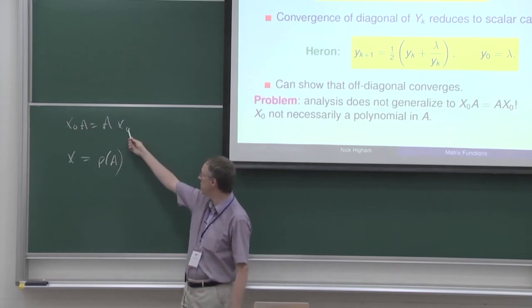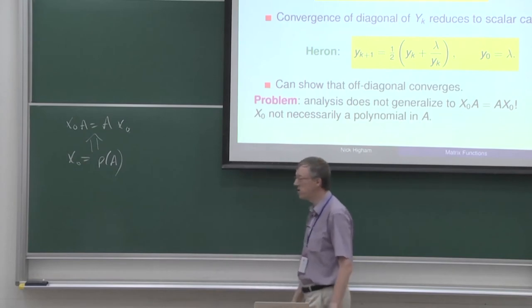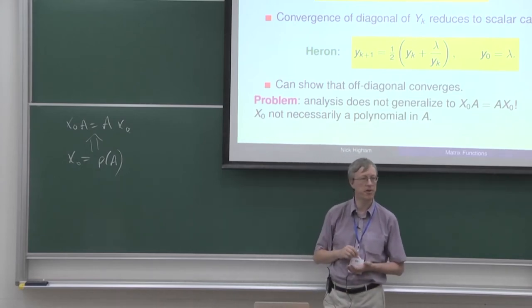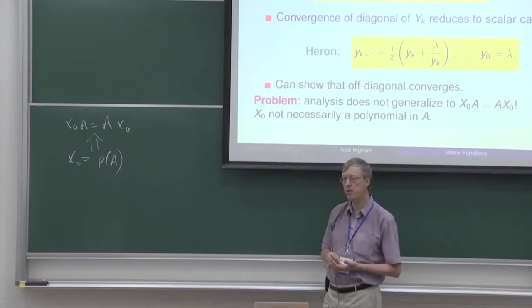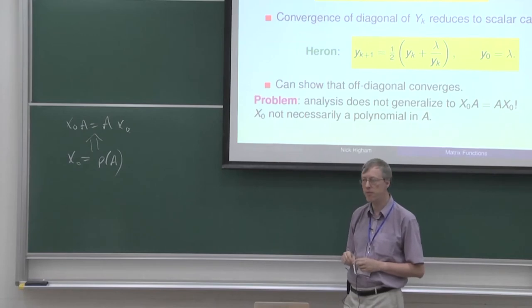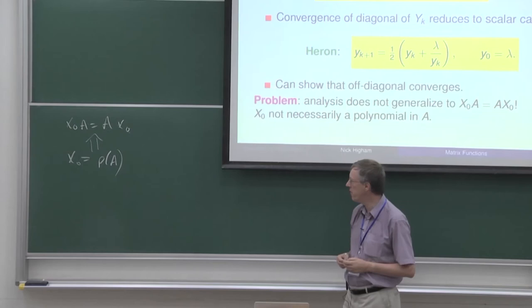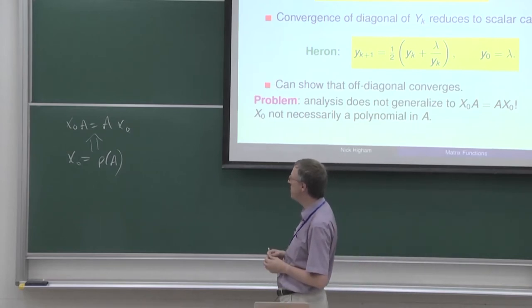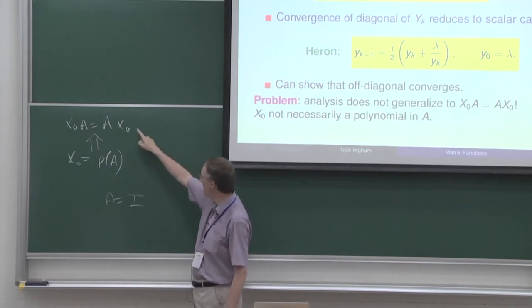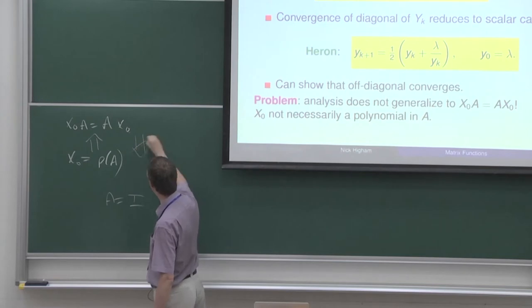It's clear that if x is a polynomial in A, then it commutes with A — so that one implies the other immediately. Is the converse true? Does commuting with A mean you're a polynomial in A? No, it doesn't. It would be true if A was non-derogatory. A derogatory matrix is one whose Jordan form has the same eigenvalue in more than one Jordan block. If A is non-derogatory, the reverse implication is true; otherwise it's not. If you take an extreme case — A equal to the identity — then x0 certainly commutes with A but x0 doesn't have to be a polynomial in the identity.